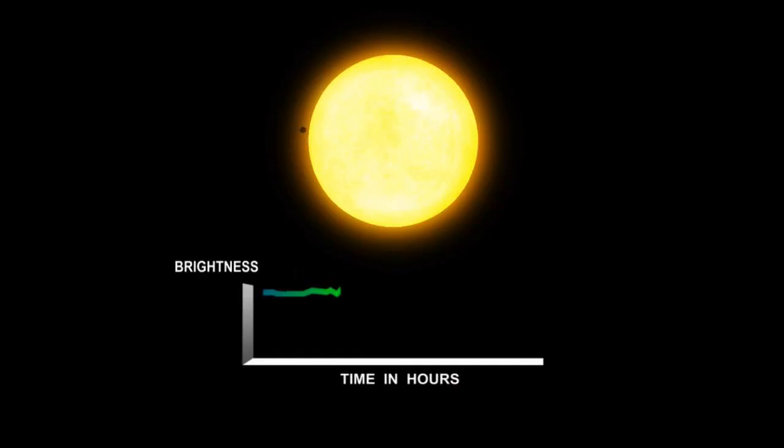The transit technique takes advantage of the possibility that some planets' orbits are going to be aligned in such a way that every time the planet orbits the star, it passes across the face of the star with respect to the observer. It seems remarkable that a planet passing in front of its star, perhaps dozens, hundreds or even thousands of light-years away, can block enough of the star's light to create a detectable dip in brightness.